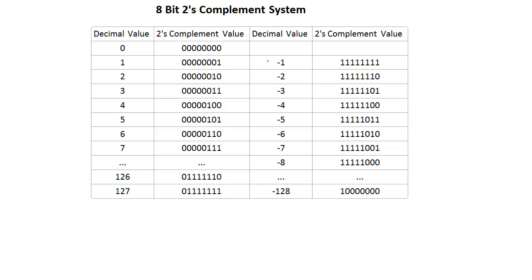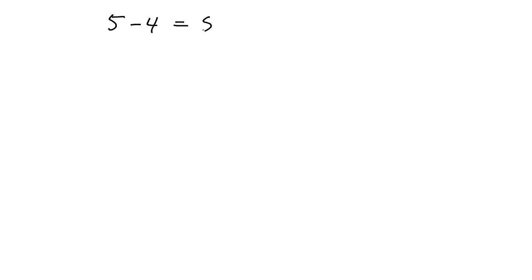One of the big advantages of the 2's complement system is that it allows addition and subtraction to be done with essentially one block of logic. Instead of subtracting one number from another, you can perform the addition of the negative of that number. To get the negative of a number, you apply the 2's complement operation. This means you don't need extra logic to handle subtraction separately, saving a lot of gates in your design.